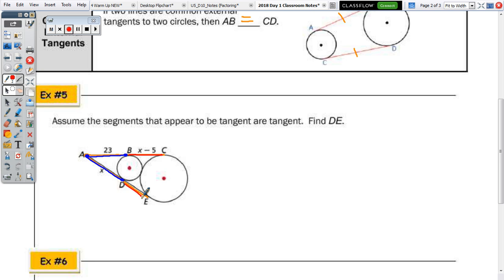Subtraction. So, if A to B is 23, we know X is 23. So, we plug it in. 23 minus 5 is 18. So, DE is also 18.